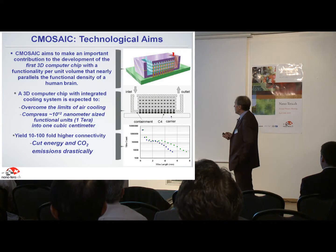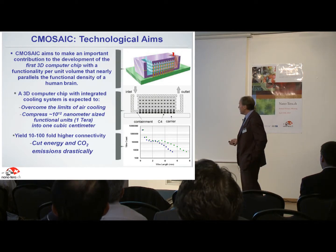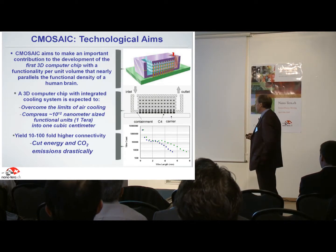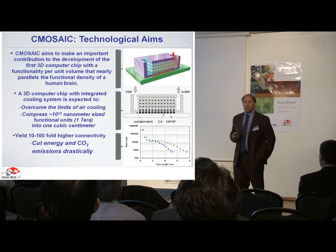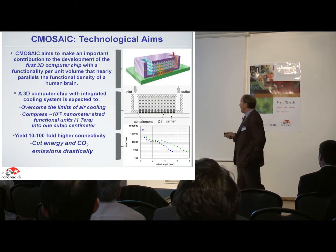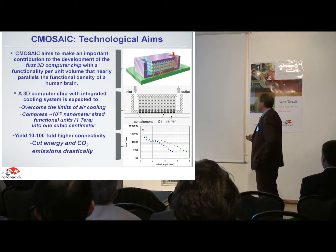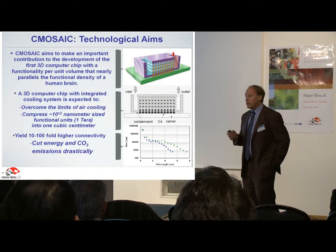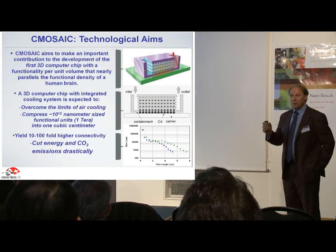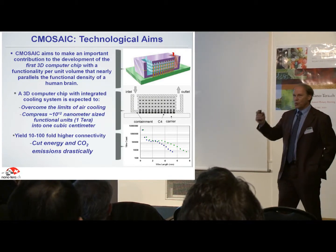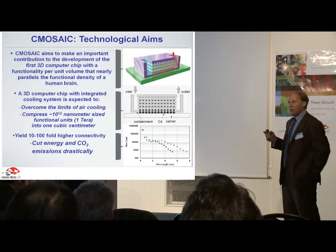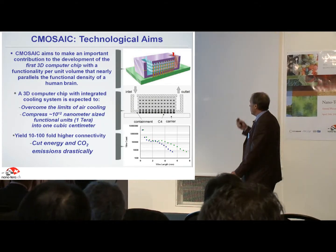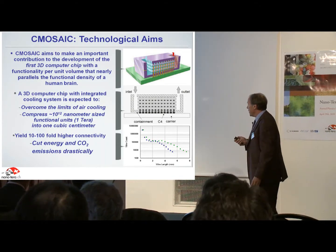What we're trying to do is bring on the order of a terra number of functional units within one cubic centimeter. This has a density on the order of a human brain. We're talking about quite a complex system when we get to the other end.